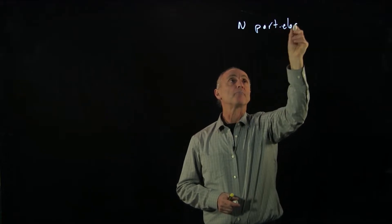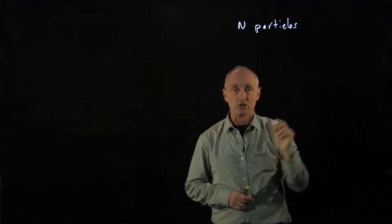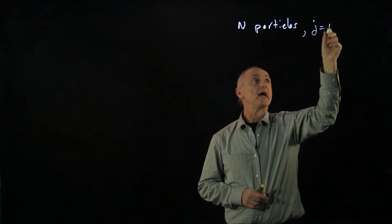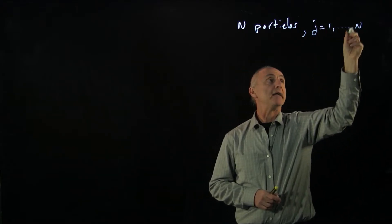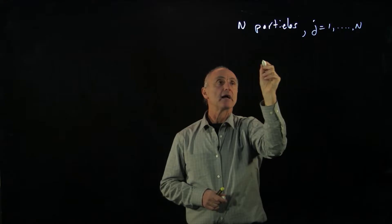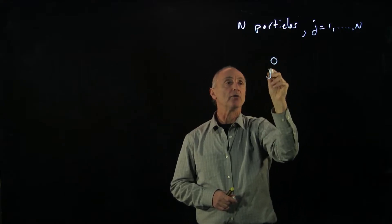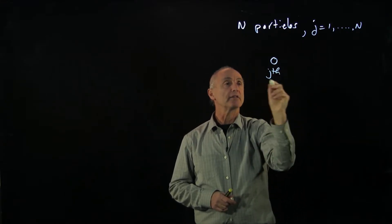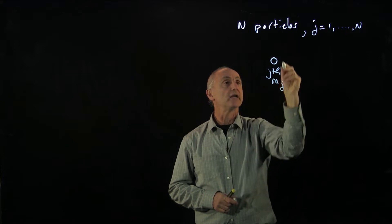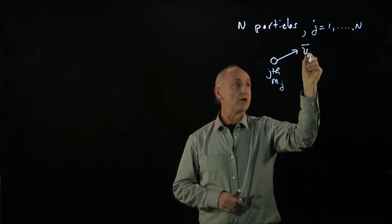Now, when we have a lot of particles, we need some type of notation. So let's use the symbol j, and it will go from 1 to N. And then our arbitrary j-th particle will be moving. This particle will have mass mj, and it will be moving with the velocity vj.